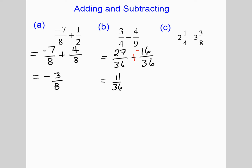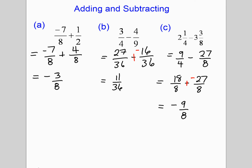For the last one, whenever you have mixed fractions always turn them into improper first. 2 times 4 plus 1 is 9 over 4, and 3 times 8 plus 3 is 27 over 8. Get a common denominator of 8, then subtract. In this case the second one is bigger than the first, so you can think of it as adding the opposite. You'll find that the answer is negative 9 over 8. If you have any questions, please write them down and ask me in class tomorrow.